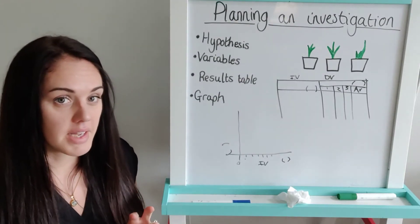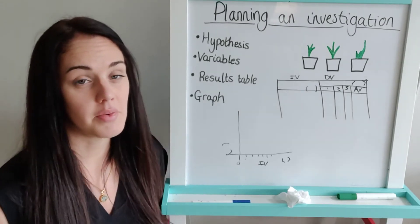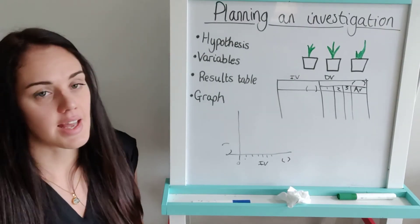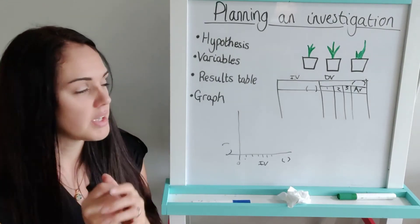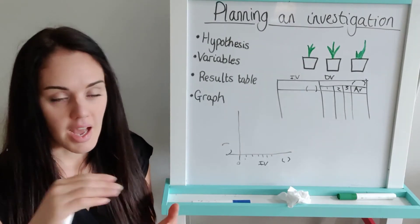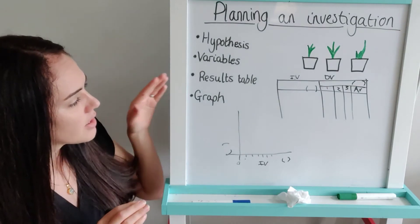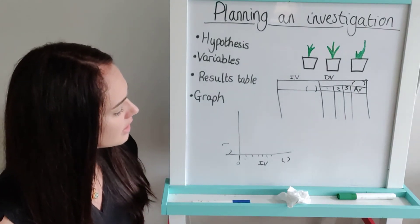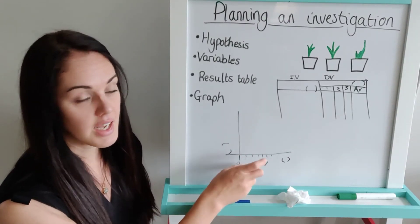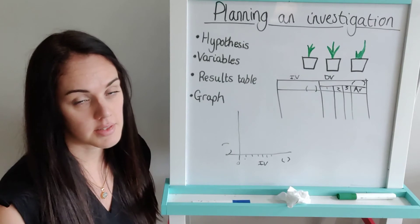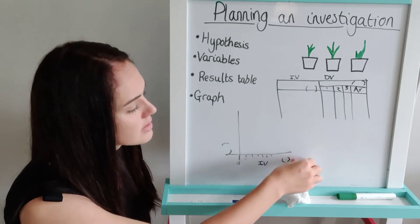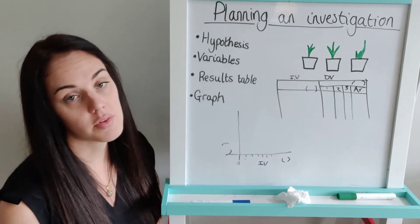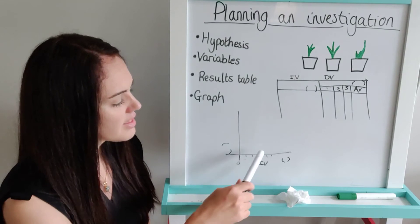To summarise: the independent and dependent variables are really important. Your hypothesis states that the independent variable will affect the dependent. You identify all three types of variables — independent, dependent, and the important control variables that must be kept the same to make it fair. In the results table, the independent variable goes in the first column and the dependent in the second — write out what they are for your particular investigation. For the graph, the independent always goes at the bottom, and whether it's a line graph or bar chart depends on whether the independent variable is continuous or categorical.